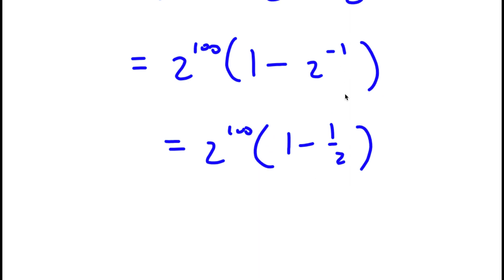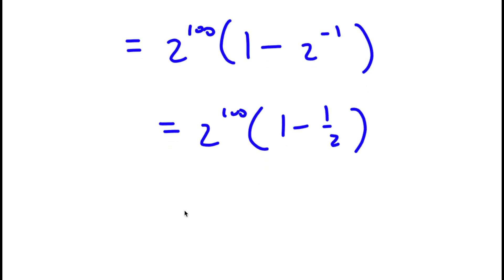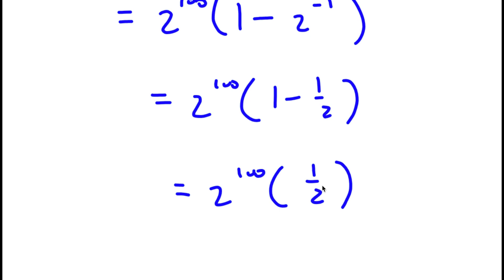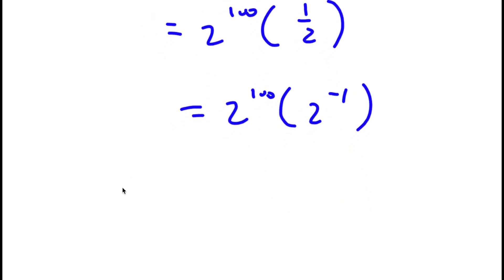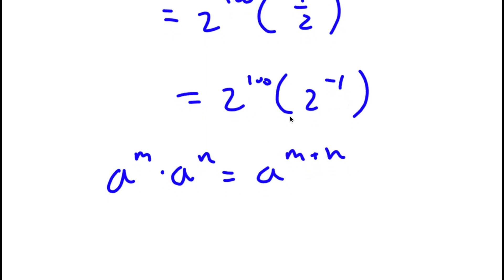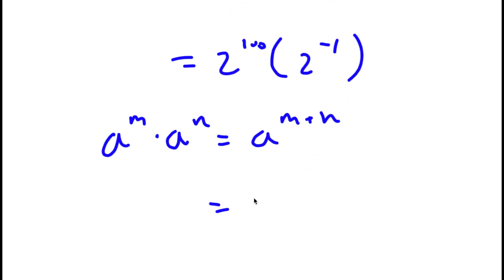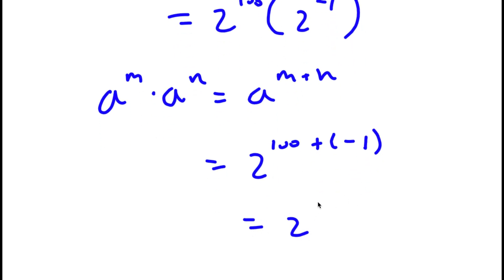1 minus 1 half is simply 1 half, so I have 2 to the power of 100 times 1 half. And 1 half is simply 2 to the power of negative 1. So now I have 2 to the power of 100 times 2 to the power of negative 1. Remember, if I have a to the power of m times a to the power of n, this is equal to a to the power of m plus n. So 2 to the power of 100 times 2 to the power of negative 1 equals 2 to the power of 100 plus negative 1, which equals 2 to the power of 99. So this is my answer.